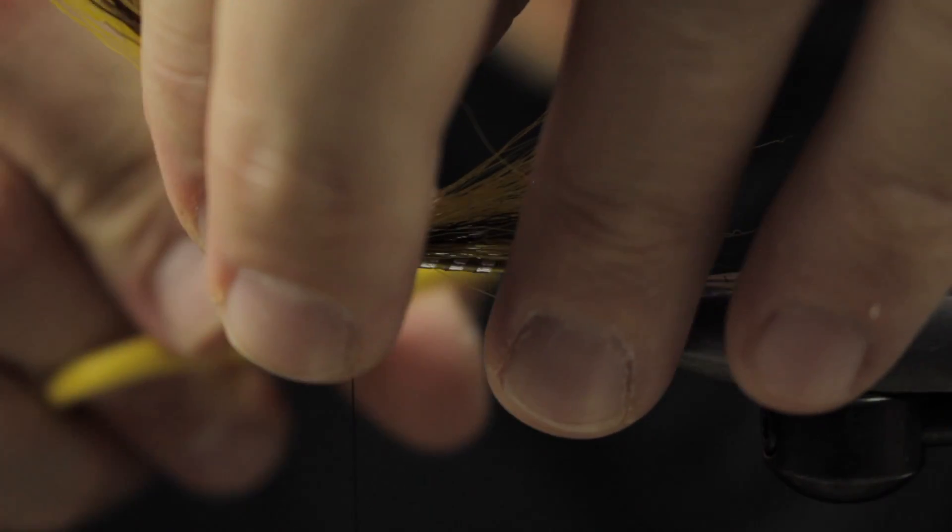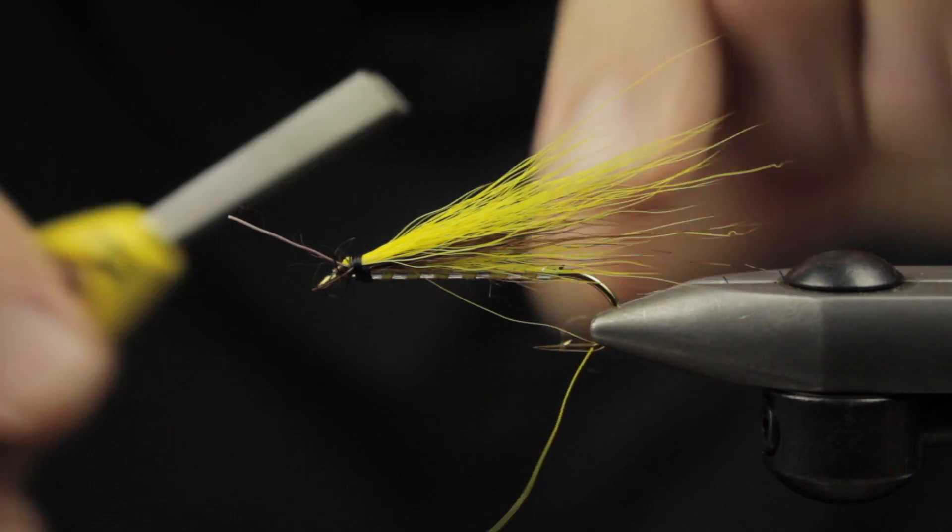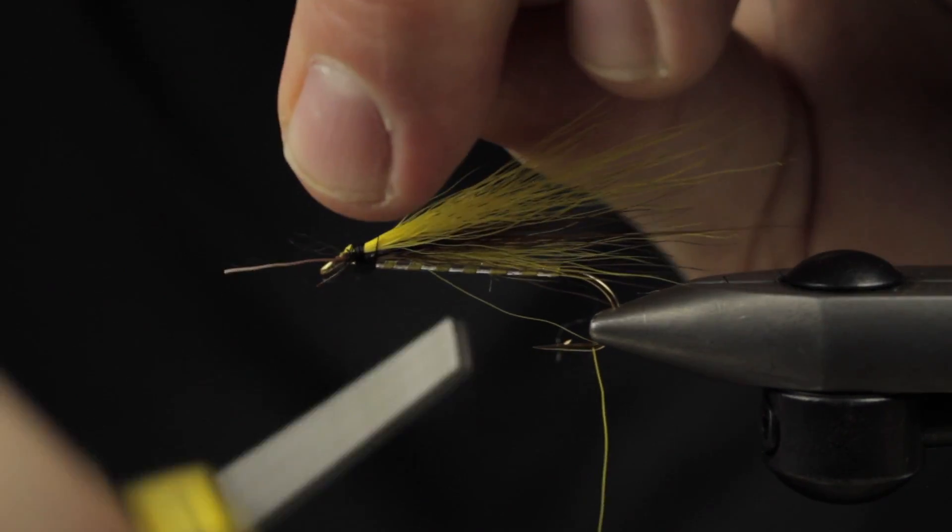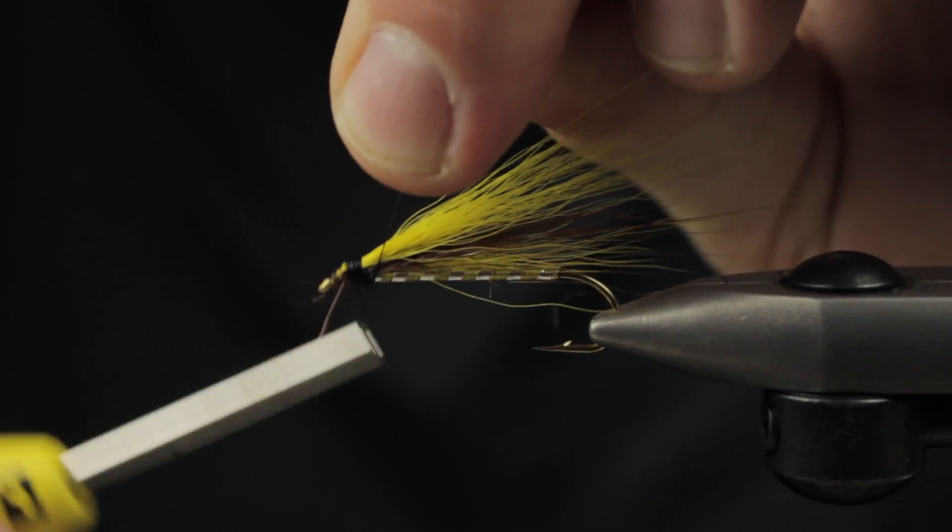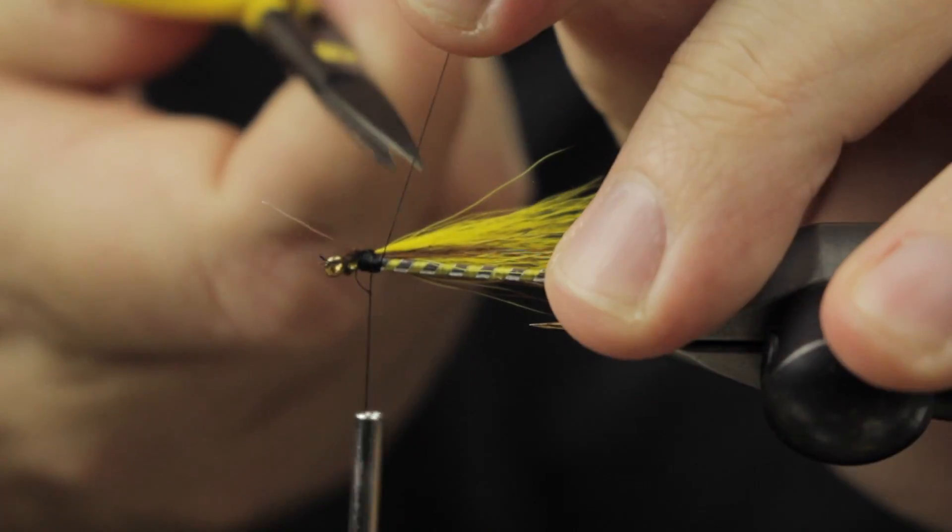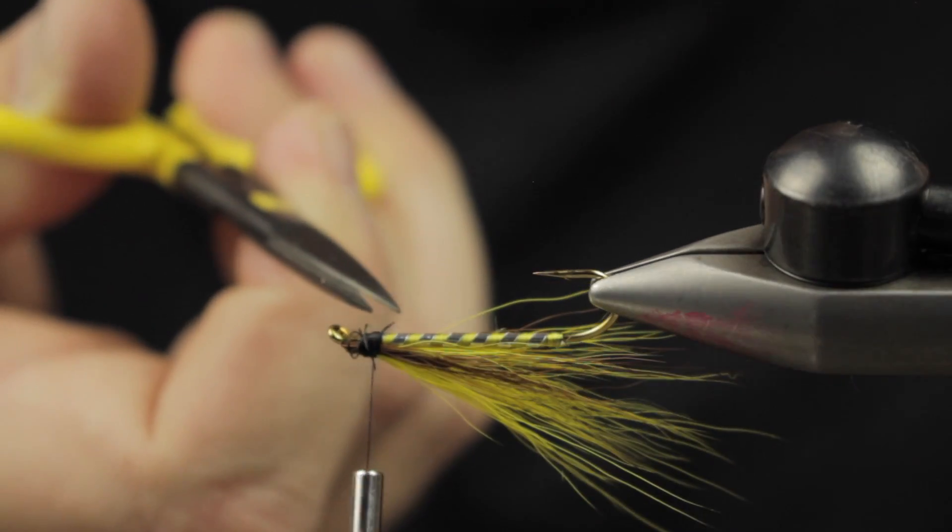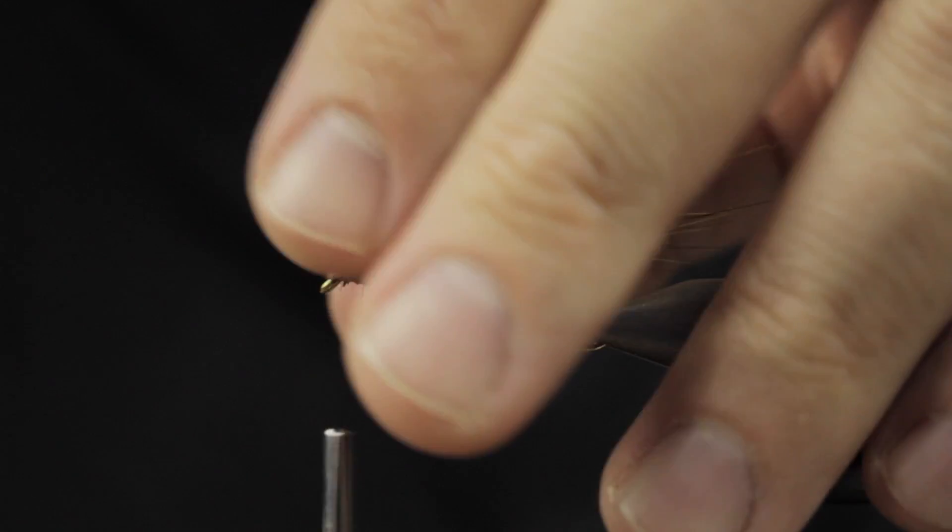I'm going to pull all of my butt sections, which are the thicker portion of the bucktail up, and get ready to create the head. Looks like I goofed up there and cut my thread—what a rookie maneuver. Anyways, that happens when you've got strands of stuff going everywhere. Not a huge issue, we'll clean it up and move forward.